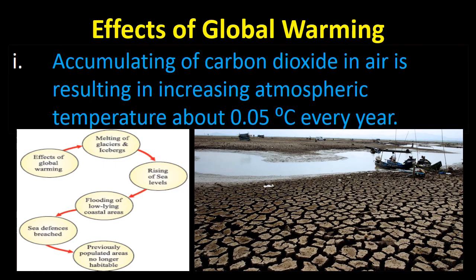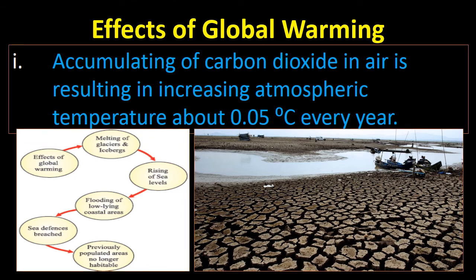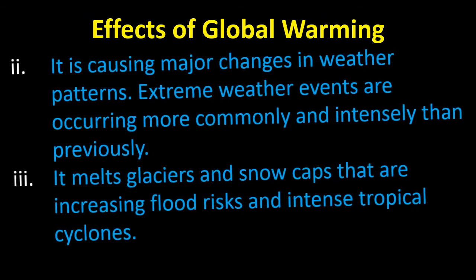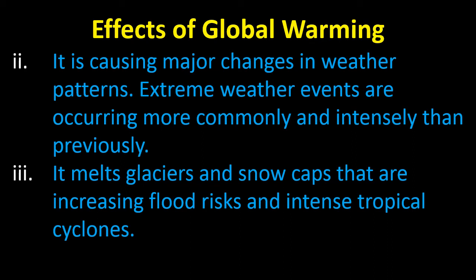Global warming is dangerous. The accumulation of carbon dioxide in air is resulting in an increasing atmospheric temperature of about 0.05 degrees every year. The effects of global warming include: melting of glaciers and icebergs, causing more water and rising sea levels, which means flooding of low-lying coastal areas, sea defences being breached, and previously populated areas becoming no longer habitable. Global warming is also causing major changes in weather patterns, with extreme weather events occurring more commonly and intensely than previously.